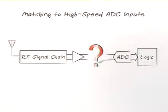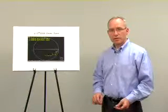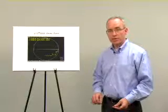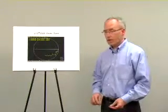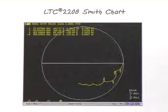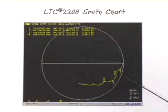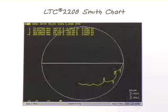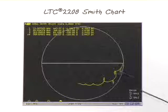In the RF domain, components along the signal chain require matching if the next component has a different impedance, but matching the end of a signal chain to the front of an ADC is not so simple. The traditional way to approach the problem is to measure the input impedance of an ADC in a Smith chart. Here's the input impedance of a 16-bit ADC sampling at 130 mega samples per second. You can see that the resistance varies with frequency and the complex impedance is capacitive, and then it rotates.